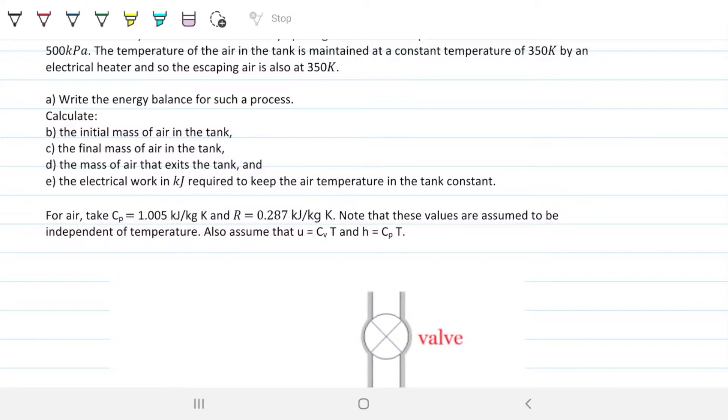Part A: write the energy balance for such a process, and then calculate the initial mass of air in the tank, the final mass of air in the tank, the mass of air that exits the tank, and the electrical work in kilojoules required to keep the air temperature in the tank constant. For air, take Cp to be 1.005 and R to be 0.287 kilojoules per kilogram Kelvin. Note that these values are assumed to be independent of temperature, and also assume that the internal energy is equal to Cv times T, and the enthalpy is equal to Cp times T.